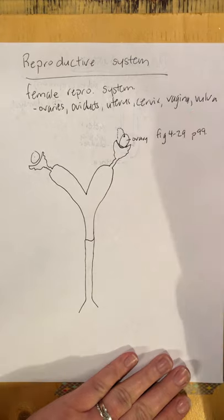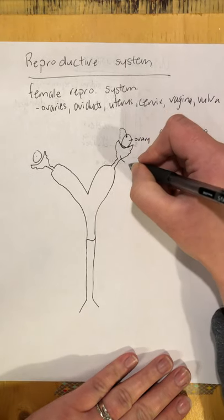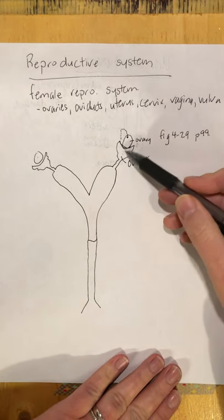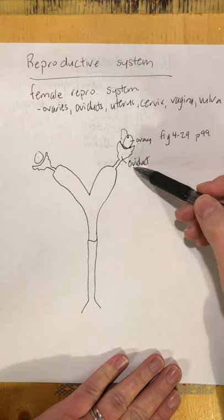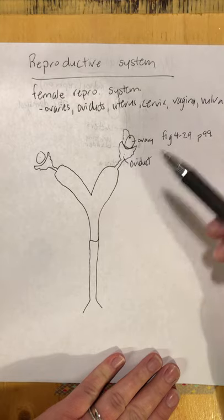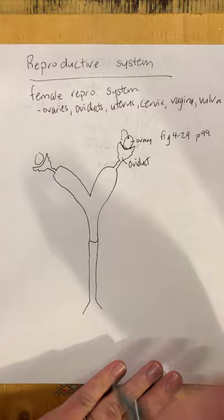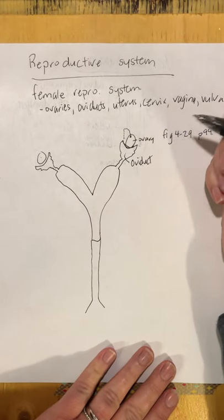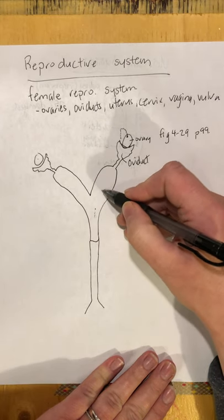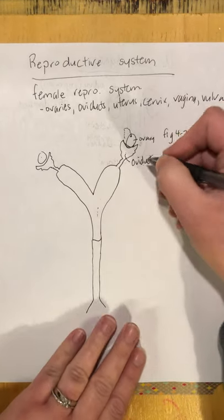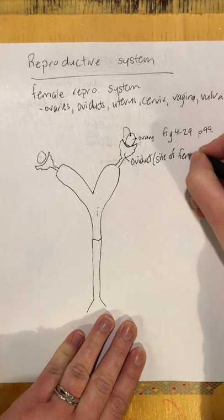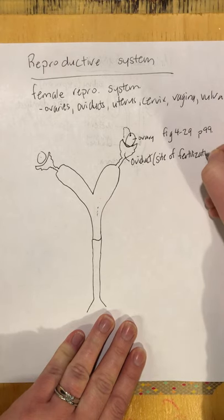The matured egg ovulates and gets collected into the oviduct. You've probably heard the term fallopian tubes — oviduct is another term for those. Ovi refers to the egg, and duct leads somewhere, so the oviduct is like the hallway that leads into the uterus. The oviduct is where fertilization occurs — after the female has been mated, the sperms swim up into the oviduct and meet up with the egg there.